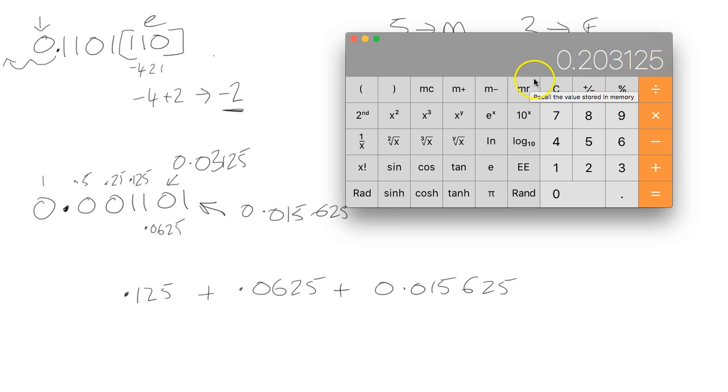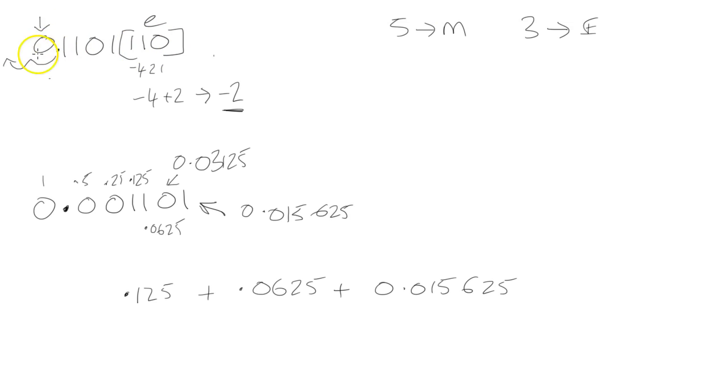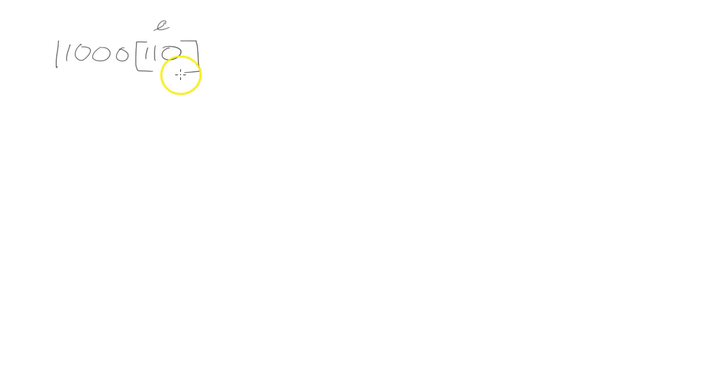So I've shown you now how to do floating point using a positive exponent and a negative exponent. What happens if the mantissa starts with a 1 and we're moving to the left? The process is quite simple. We're going to start our number with 1: 1, 1, 0, 0 for the mantissa, and then 1, 1, 0 for the exponent. We're going to be moving 2 to the left, because minus 4 plus 2 results in minus 2.